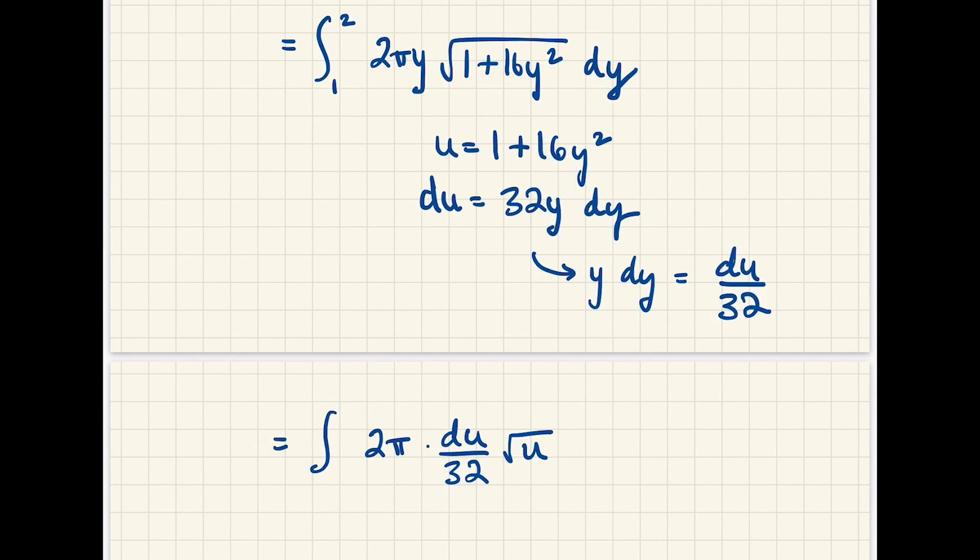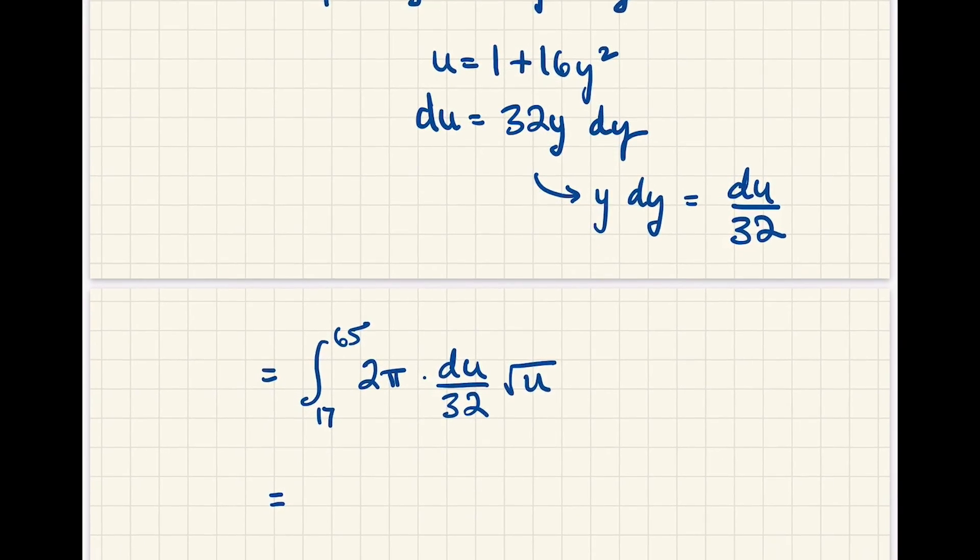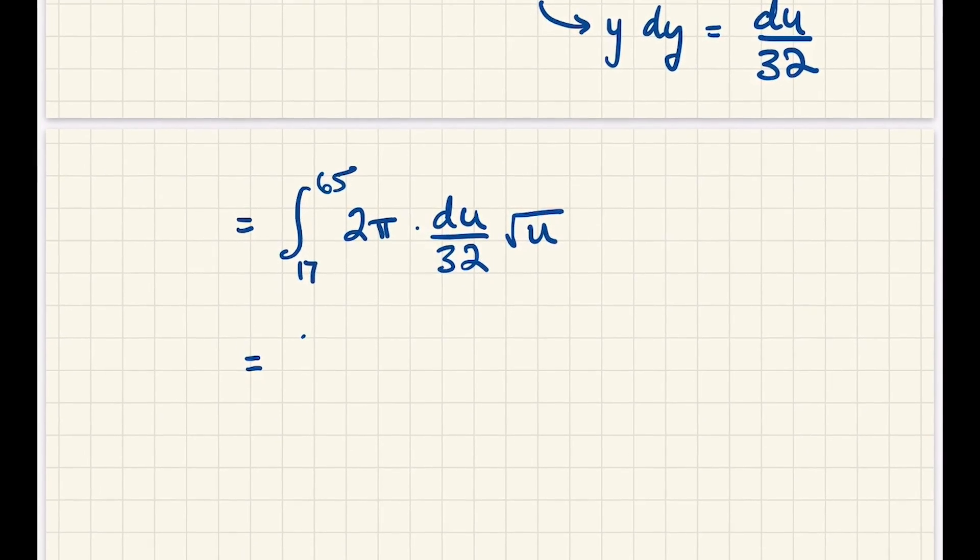Our new bounds are when y is equal to 1, u is equal to 1 plus 16 so that's 17, and when y is equal to 2, u is equal to 1 plus 4 times 16 so that would be 65. So we can factor pi over 16.